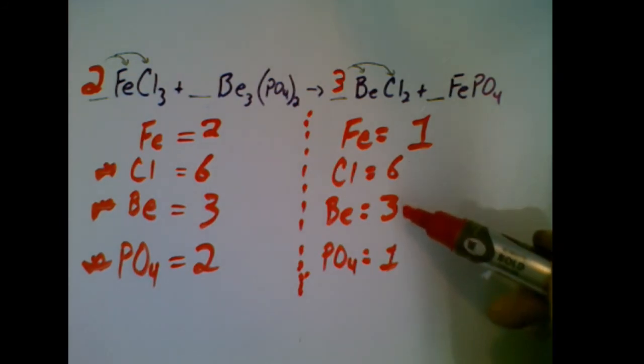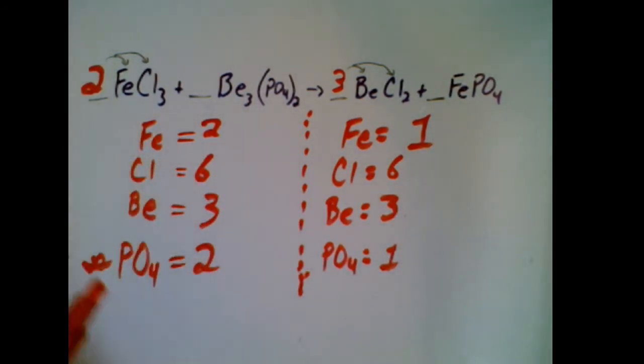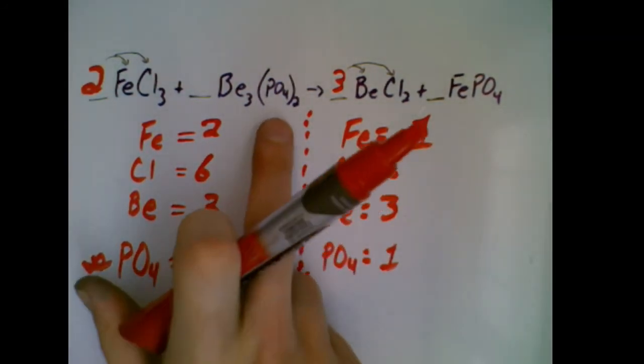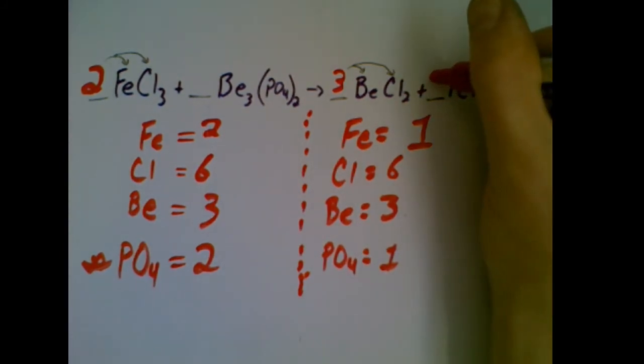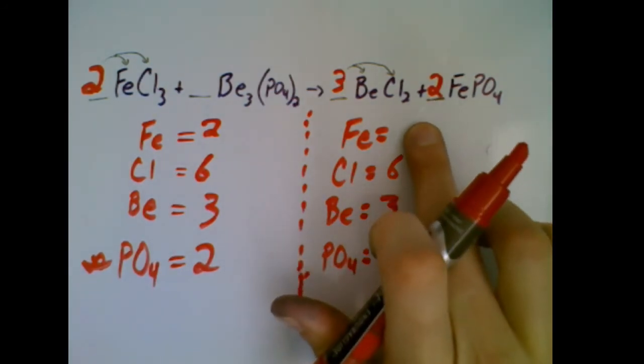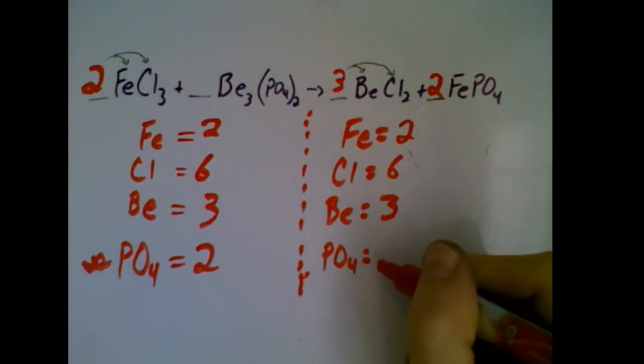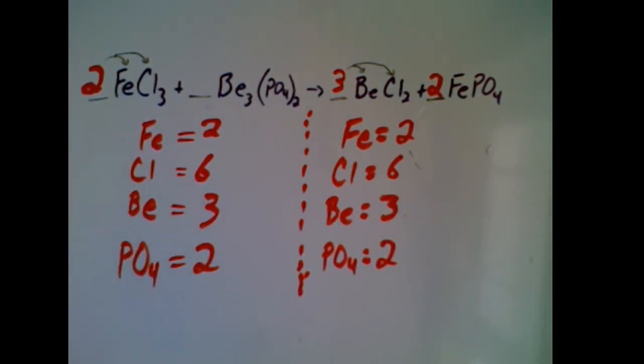That's a lot better. We're actually getting pretty close now. These two are now balanced. Let's take a look at phosphate. I have two on this side and only one on this side, so I definitely need to put a two in front. That's going to apply to both the iron, so now I have two irons and two phosphates. That is now balanced. There we go.